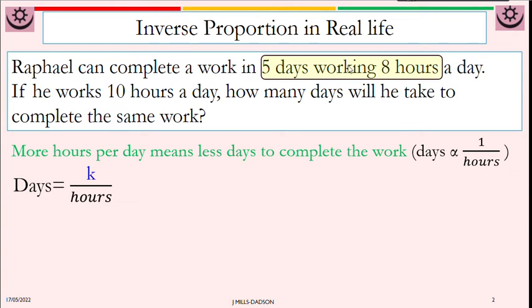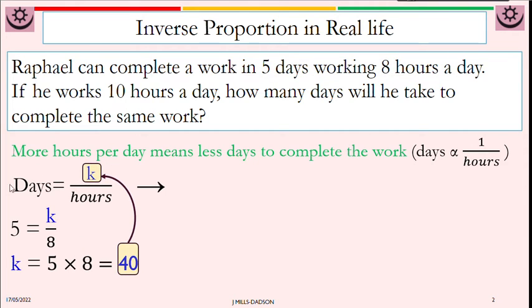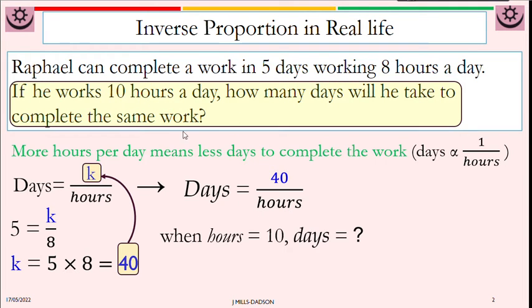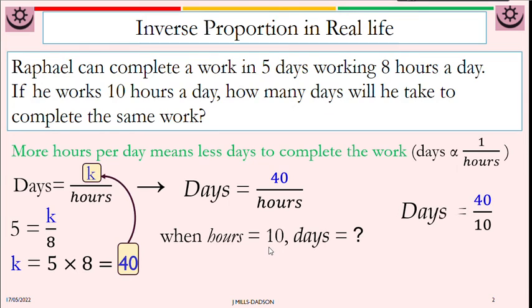You can start your formula. Days equals constant over the hours. This is the initial value similar to what we did before. We replace days and hours with 5 and 8 and work for k. Multiply both sides by h so k is 40. So this formula now becomes days equals 40 divided by hours. Now that we know this formula, then the second part actually means that when hours is 10, how many days would that be? So replace hours with 10.